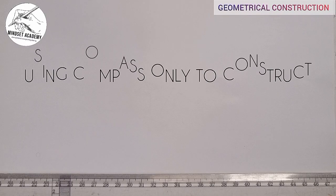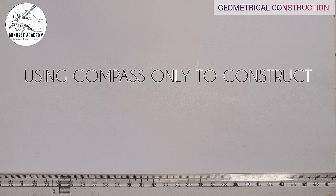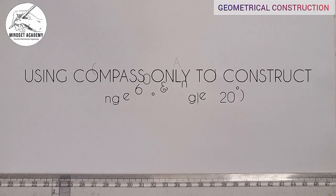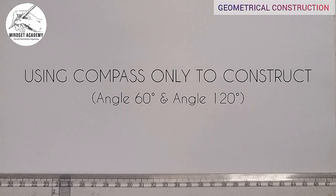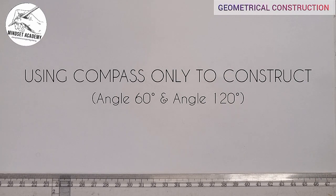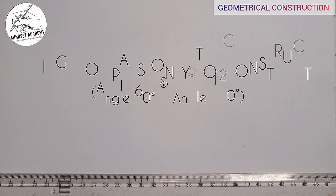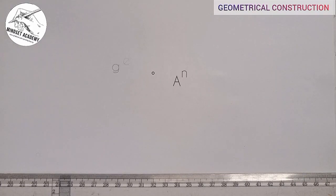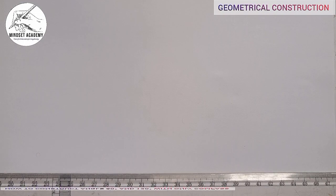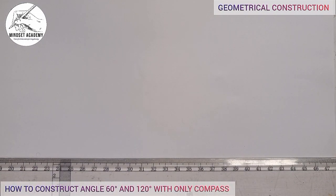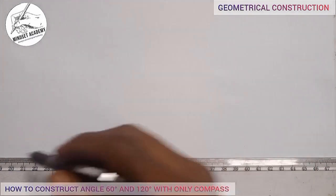Welcome to my channel. In this video we will be using only a compass and a ruler to draw or construct angles. We want to construct angle 60 degrees and angle 120 degrees. The first thing you do is take your ruler or T-square and draw your horizontal line — a faint line.